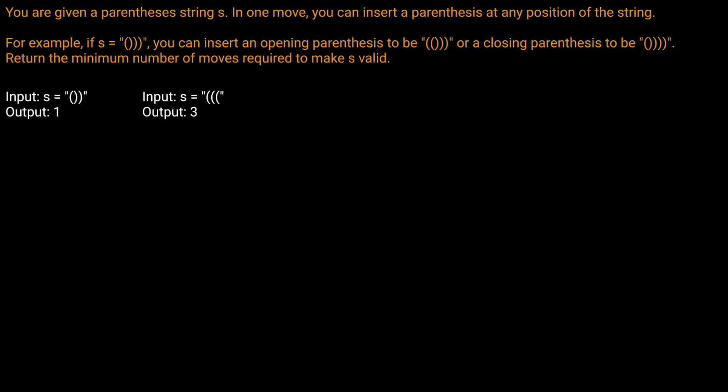You are given a parentheses string s. In one move, you can insert a parenthesis at any position of the string. For example, if s equals left parenthesis, right parenthesis, right parenthesis, right parenthesis, you can insert an opening or closing parenthesis. That's a terrible example — LeetCode should really proofread these. Return the minimum number of moves required to make s valid — essentially, insert the minimum number of parentheses so all left parentheses are closed by right parentheses and vice versa.